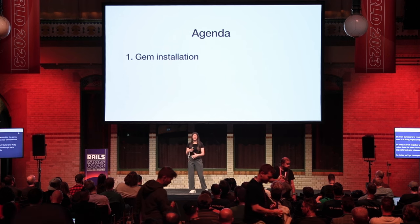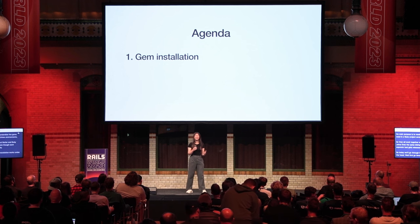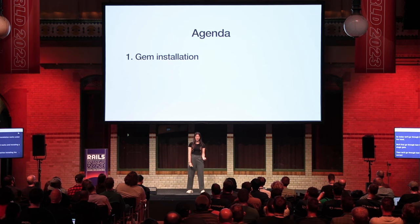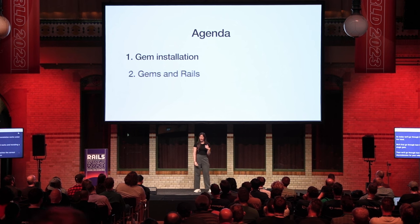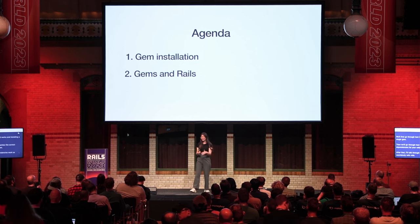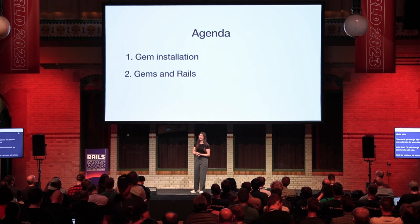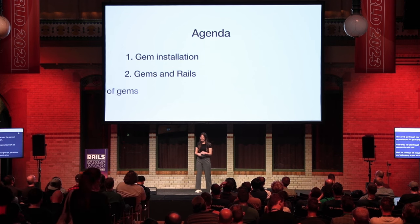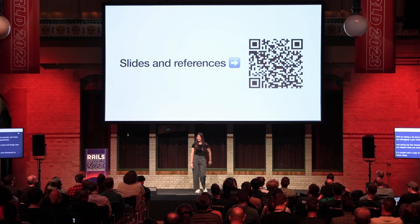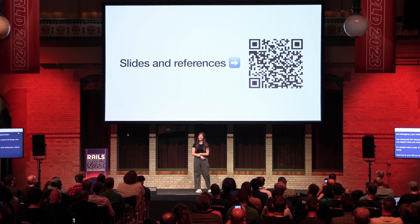So today, we'll go through how gem installation works under the hood. We'll first go through how gem install works and installing a single gem. Then we'll go through how Bundler tackles installing the correct dependencies for your Rails application. After that, I'll talk through how dependencies work so seamlessly with Rails — covering dependency groups, binstubs, and debugging a gem within a Rails application. And during the last few minutes, I'll share some evil things that could happen when you install gems. If people want a copy of the slides and references to follow along, feel free to scan this QR code.